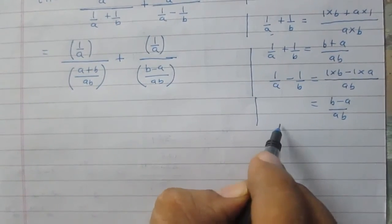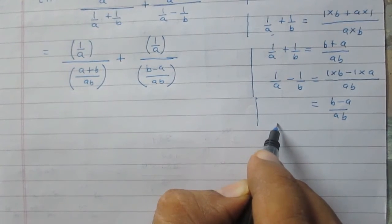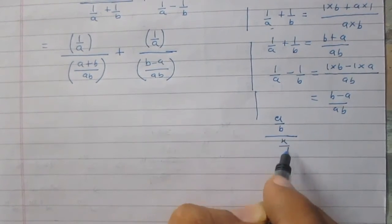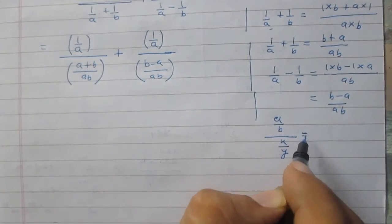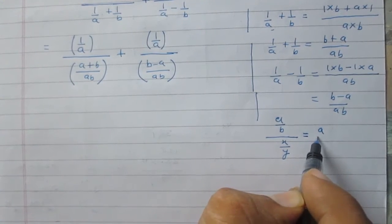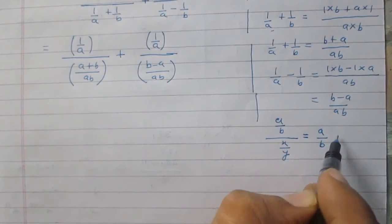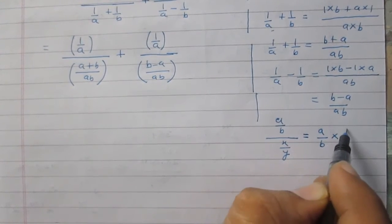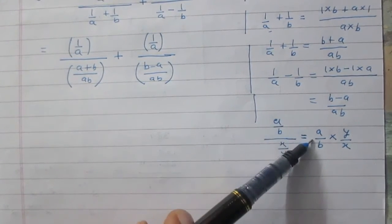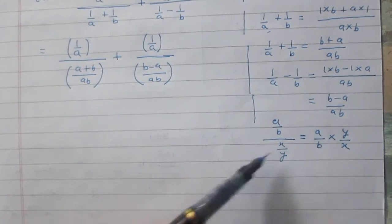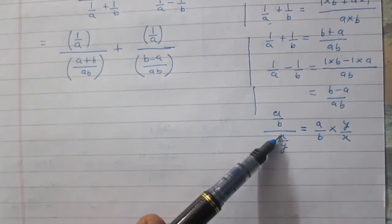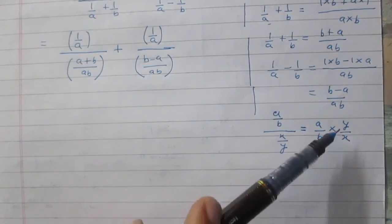In a fraction where the numerator and denominator are both fractions — for example, (a/b) divided by (x/y) — we can simplify it by keeping the numerator fraction as it is and multiplying it with the reciprocal of the denominator fraction. The reciprocal of x upon y is y upon x.